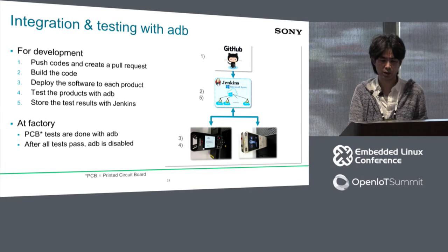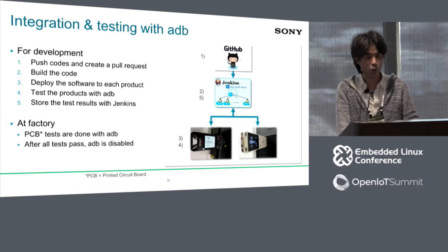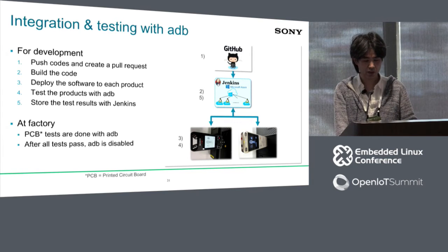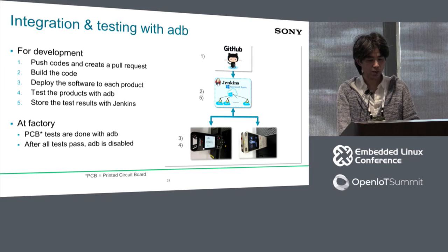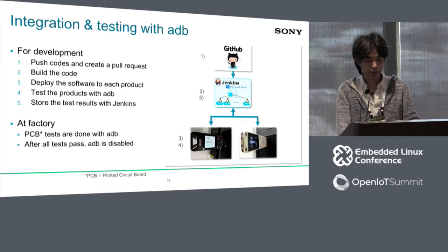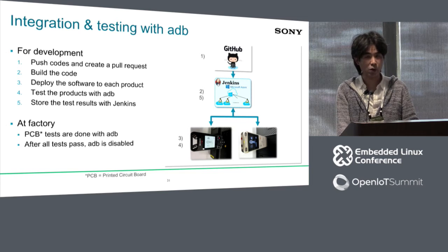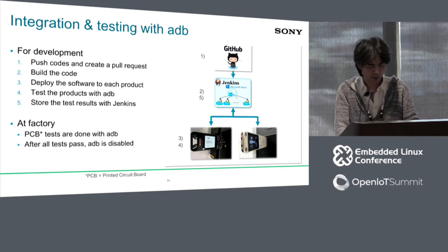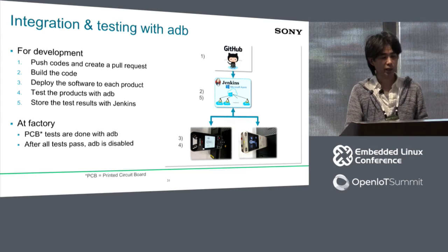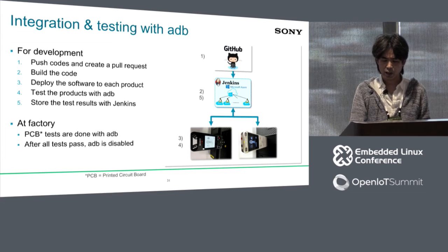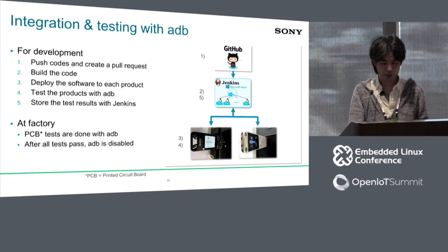The next slide shows integration testing. We constructed a build and testing system with ADB and cloud-based services such as GitHub. If a software engineer pushes code to GitHub and creates a pull request, the system automatically builds the target code, deploys the software to each actual product, and tests the products with ADB. Finally you can see test results on Jenkins. In addition, PCB tests at the factory are done with ADB.